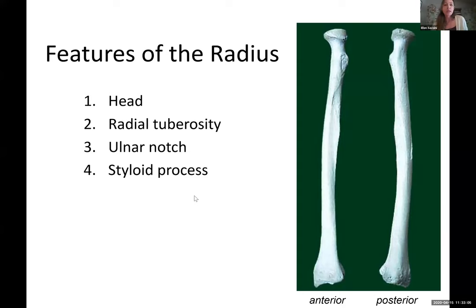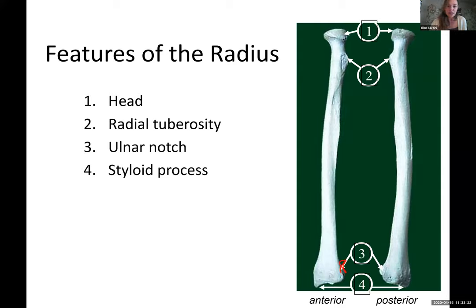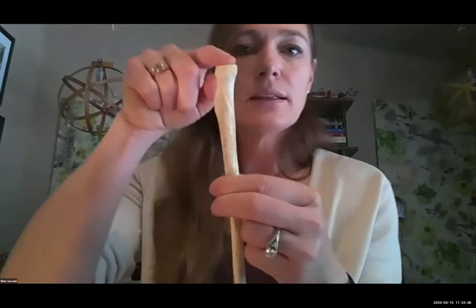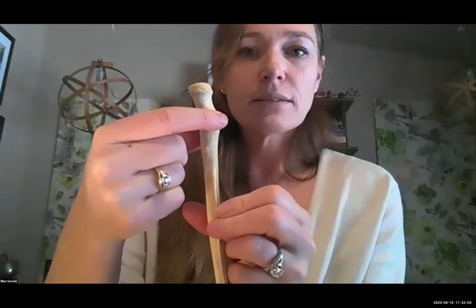So we have the head — that's the golf tee part. The radial tuberosity is this knobby part that's kind of high up — a tuberosity tells you it's a chunky part of bone. At the very bottom is the ulnar notch, a little divot cut in that the ulna will connect onto. And then we have the styloid process. So looking at this picture: head, radial tuberosity, the ulnar notch is fitted right in there, and then the styloid process.